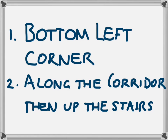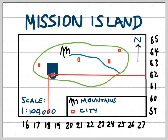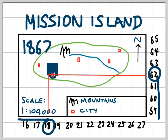The second thing we need to remember is that we have to go along the corridor, then up the stairs — just like in the picture we saw, we always have to remember to go along the corridor first, and then up the stairs afterwards. So that means we move along our eastings until we reach 18, and then we go up the stairs to 62. The area reference for this shaded area is 1862. So the four-figure area reference for that area is 1862.